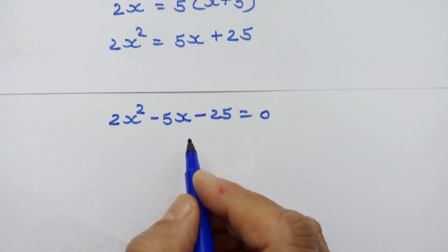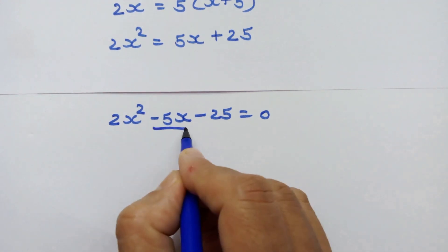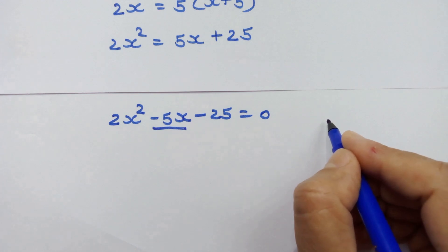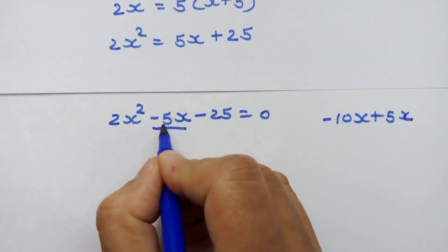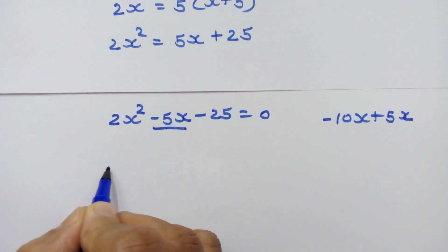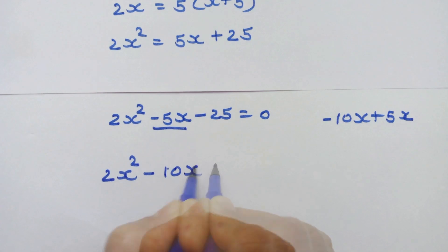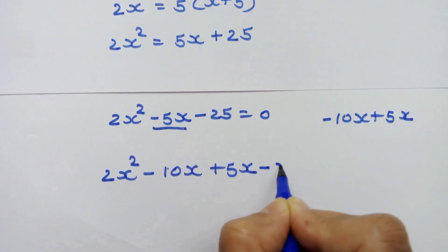Now let's see if we can factor it. Focus on -5x. Can we write -10x + 5x instead of -5x? Let's do it: 2x^2 - 10x + 5x - 25 = 0.